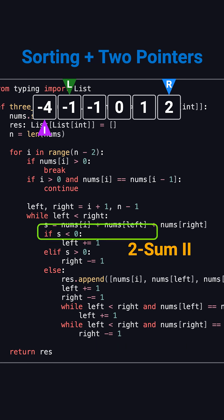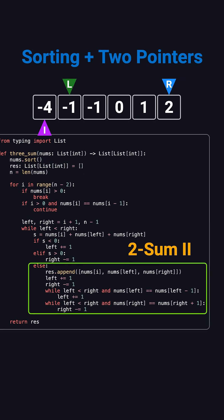If the current sum is less than 0, we move the left pointer to the right to increase the sum. If it's greater than 0, we move the right pointer to the left to decrease it. When the sum is exactly 0, we record the triplet and move both pointers inward to continue searching.